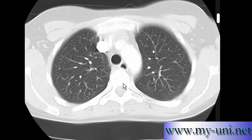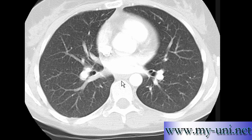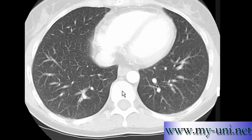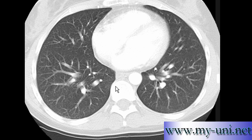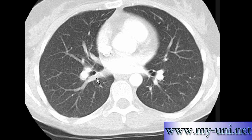First, a normal CT scan of chest in lung window. I want you to pay attention to the lungs. I am scrolling through the images so you can see a normal pattern — that's how normal lungs should look on a CT scan. Notice the air density within lungs, and the blood vessels passing through the lung parenchyma. They are bigger towards the hilum and taper and branch off as we move towards the periphery.